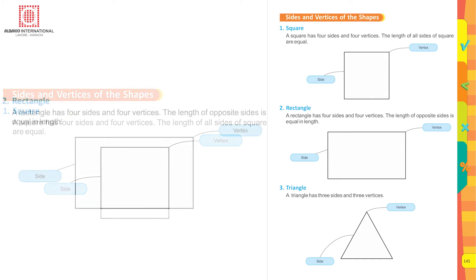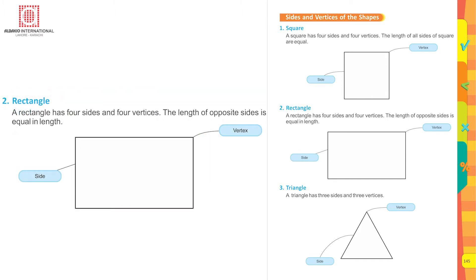Now look at a rectangle. A rectangle has four sides and four vertices. The length of opposite sides is equal. There is a difference between a square and a rectangle — the opposite sides of a rectangle are equal, but all four sides are not equal. So how many sides? 1, 2, 3, 4 — yes, 4 sides.